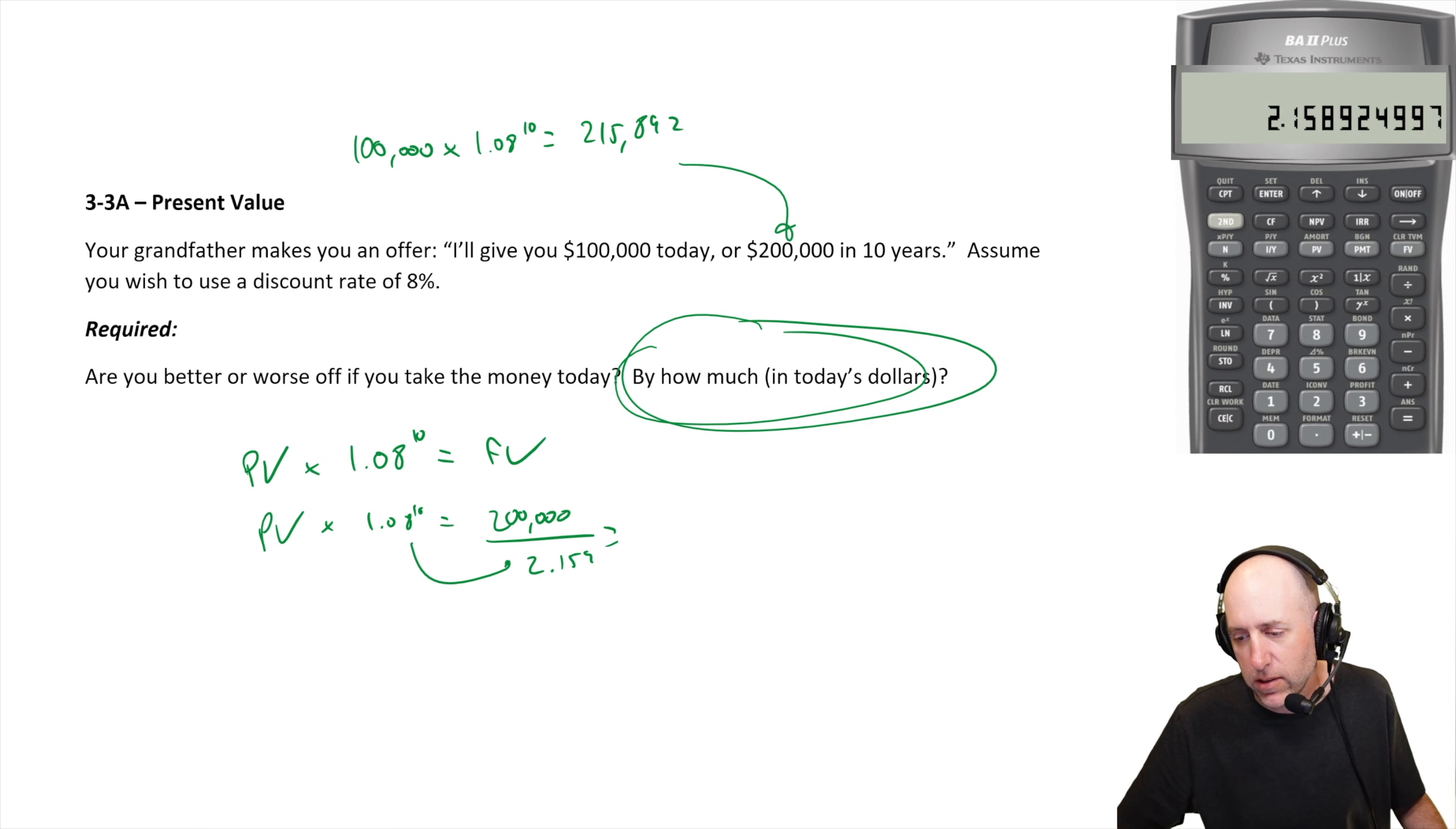To do that, just to keep all the decimals, you can go 1 over X in your calculator to divide 1 divided by 2.15, and then multiply that by 200.